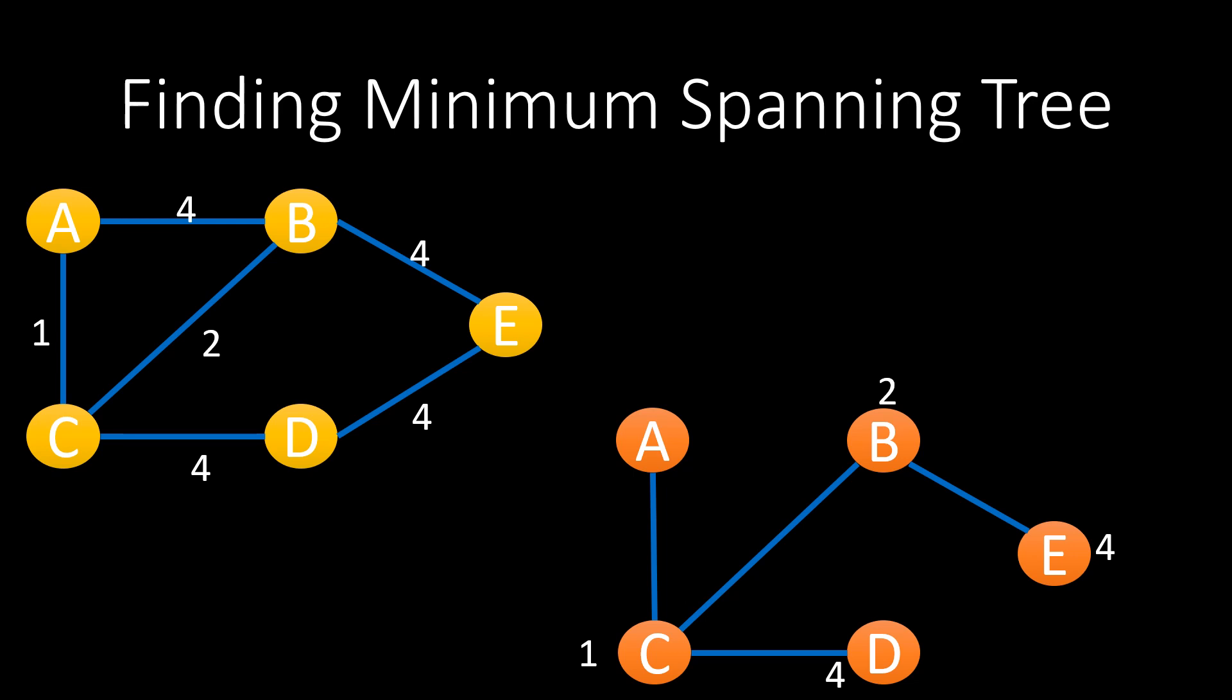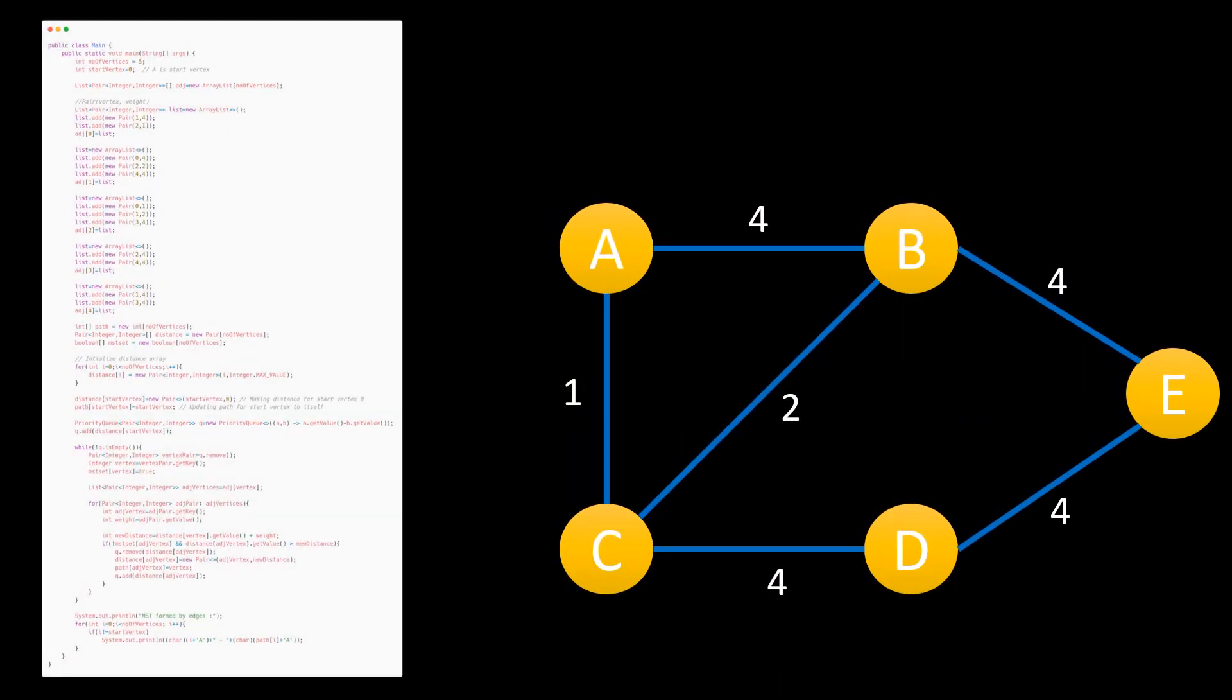Before we jump to code, I would suggest you to create an algorithm by yourself. You can always come back and verify. Now let's see the code. For the graph discussed, this is the code which we need in order to find the minimum spanning tree using Prim's algorithm.